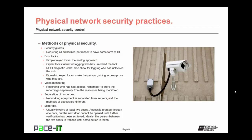Video monitoring can also be deployed as a form of physical security, allowing you to record who has had access to those resources. Remember to store the recordings separately from the resources being monitored so that if the resource gets stolen, they don't steal the recording as well. You may implement a separation of resources — networking equipment kept separate from servers, with different methods of access for the two resources. And finally, in highly secure environments, a man trap may be implemented. A man trap usually involves at least two doors — access is granted through one door, but the next door cannot be opened until further verification has been achieved, and the person between the doors cannot go back out the other door. Ideally, the person between the doors is trapped until some action or verification takes place.